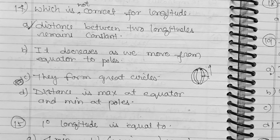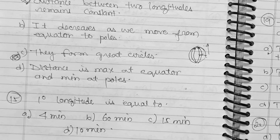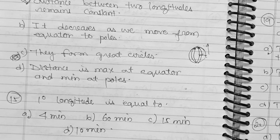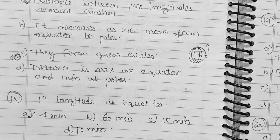Question 15: 1 degree of longitude is equal to how many minutes? Option A: 4 minutes. Option B: 60 minutes. Option C: 15 minutes. Option D: 10 minutes. The correct answer is option A, 4 minutes.